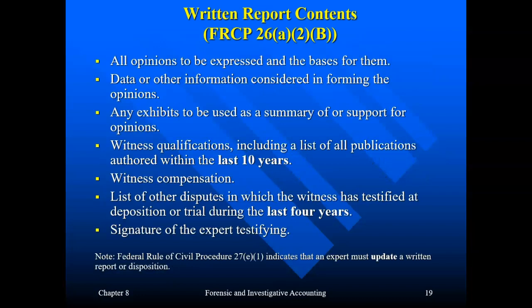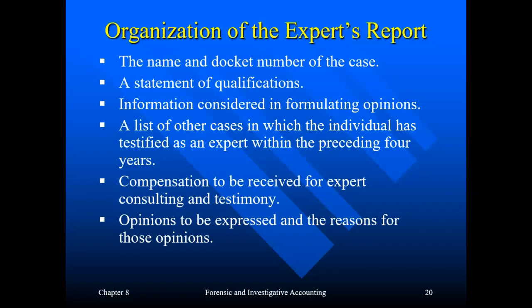The Federal Rules of Civil Procedure specify what goes in the report: all opinions expressed, the data you relied upon, exhibits, your qualifications, your compensation, and a few others. Reports are generally organized to include the name and docket number of the case, your qualifications, the information you considered in formulating your opinions, a list of other cases you worked on in the previous four years, your compensation, and your opinions. Make sure your opinions are clear and focus on the accounting work — you give opinions on the accounting and finance evidence, not on whether the other side is guilty or not guilty. That is for the judge and jury to decide.